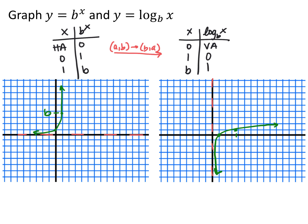If we look at the graph of y equals b to the x — our parent function — we have a horizontal asymptote at y equals 0, the point (0,1), and the point (1, b). Since logarithms are the inverses of exponentials, my inputs and outputs are switched. If I have the point (a, b) in my exponential, I have the point (b, a) in my logarithm. All y-coordinates become x-coordinates and vice versa. When we flip them, this horizontal asymptote becomes a vertical asymptote — our logarithm has a vertical asymptote at x equals 0. The point x equals 1 has an output of 0, and x equals the base has an output of 1.